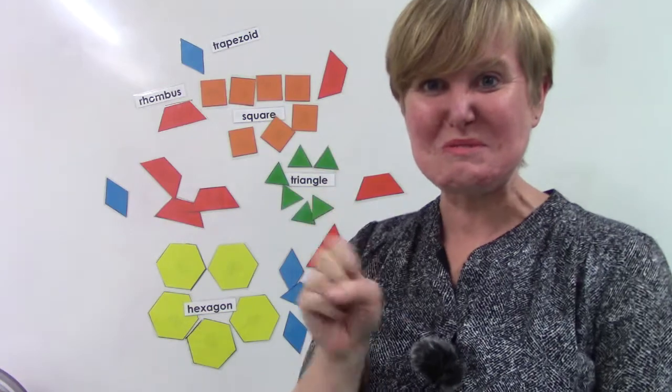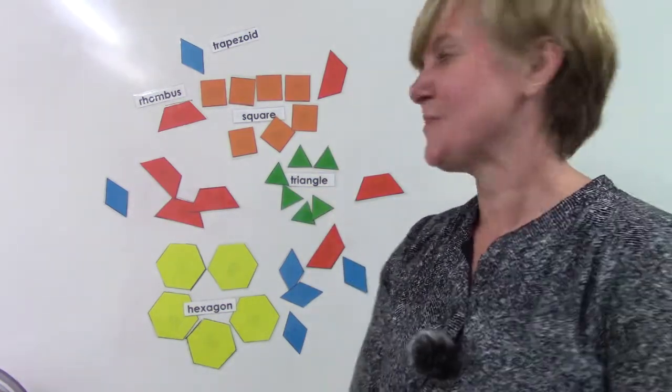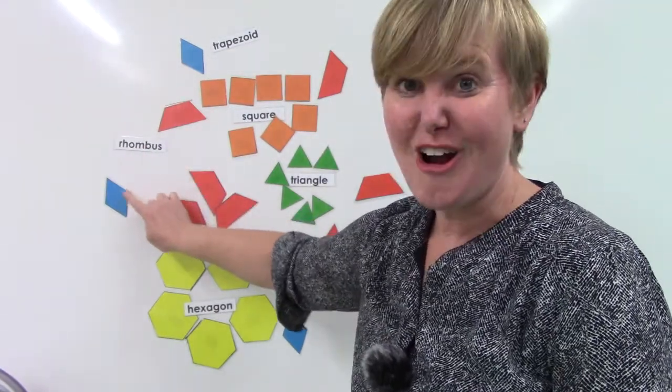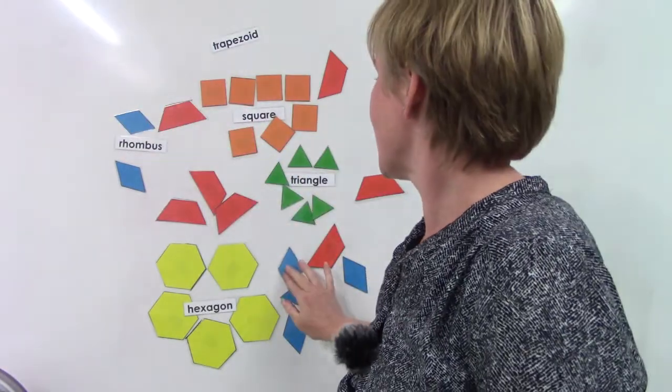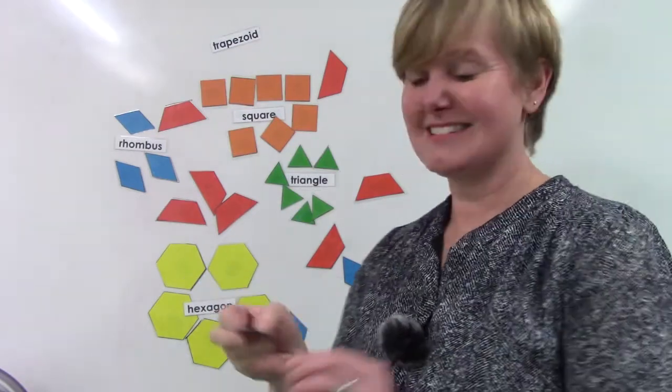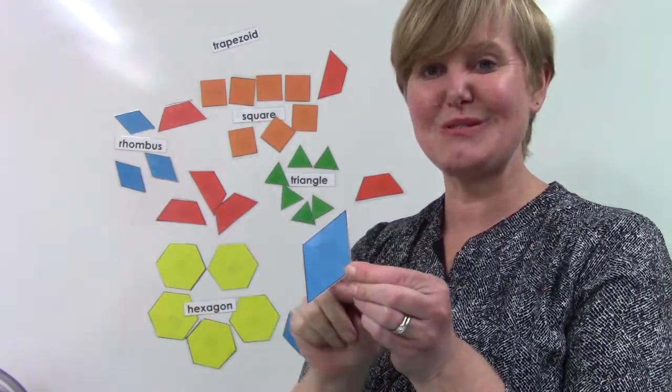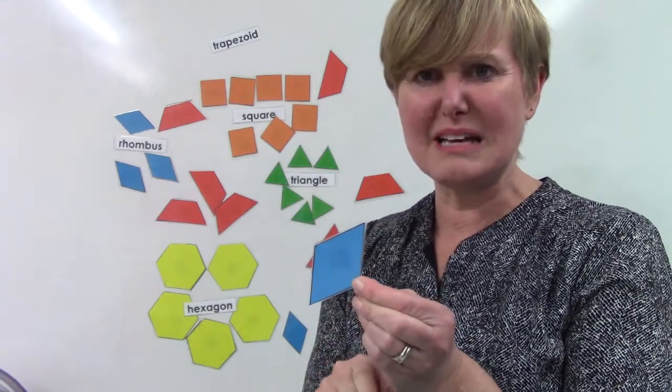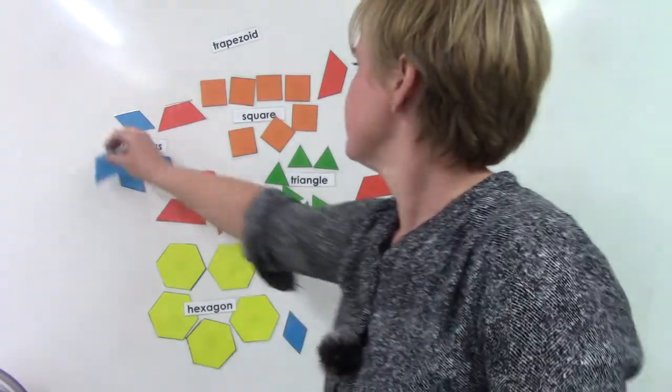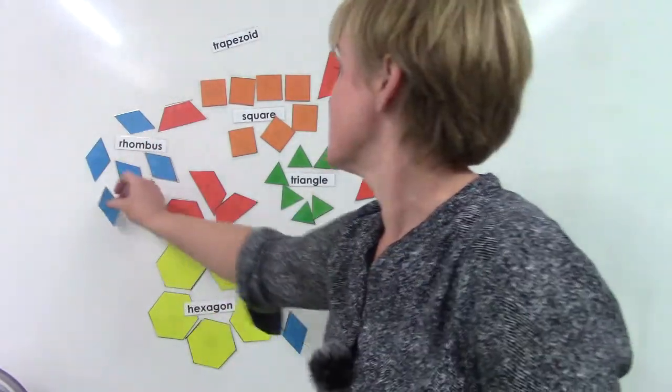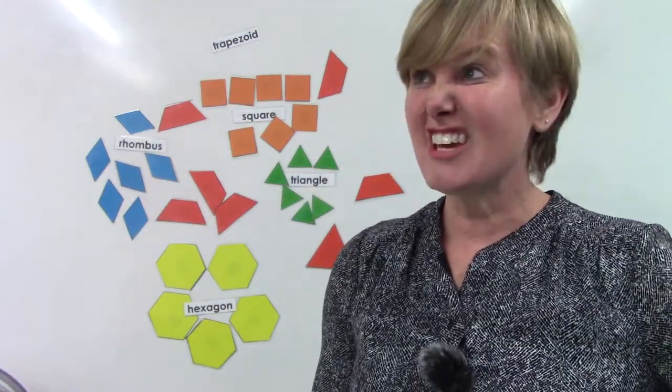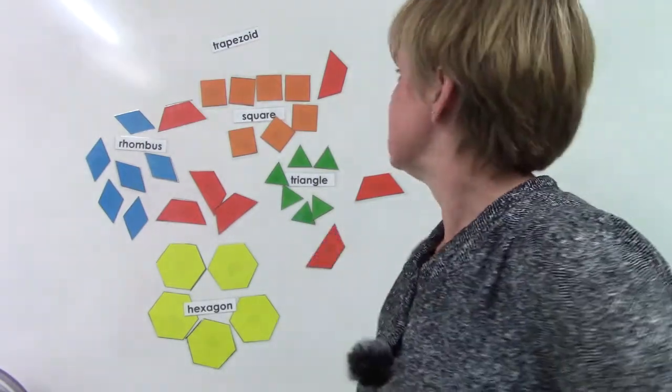I only have two more types of pattern blocks here. The first one is a rhombus. And the rhombus are our blue pattern blocks. A rhombus has four sides. Can you count them with me? One, two, three, four. It looks a little bit like a square that someone stepped on and smooshed a little bit. It's not square because the angles are not the right angle for a square.